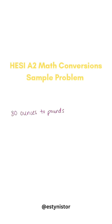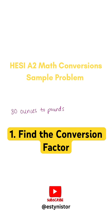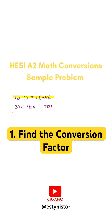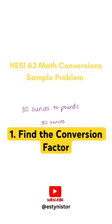The first conversion that we're going to do is 80 ounces to pounds. We want to think about what is the conversion unit that we can use to solve this problem. See here where it's highlighted — 16 ounces equals one pound is the conversion unit that we're going to be using.